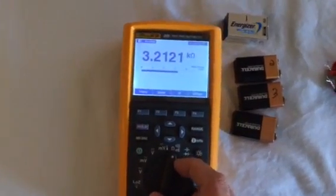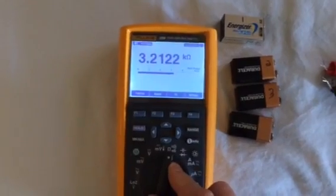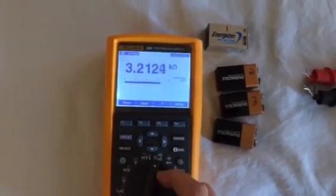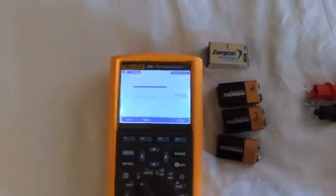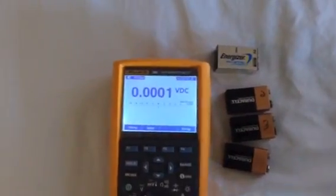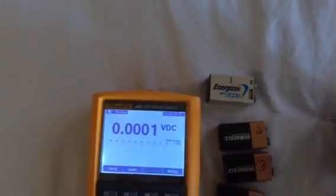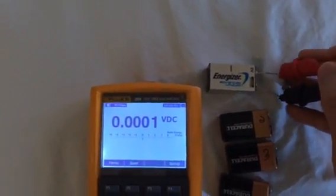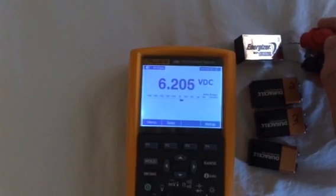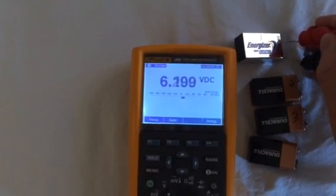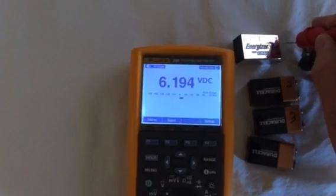So let's pretend this is a typical digital multimeter high impedance. So I'm going to go ahead and test this again. Okay, the first one, 6.2 volts.